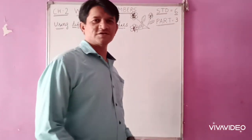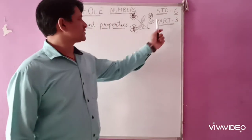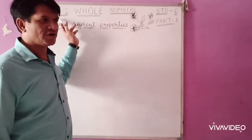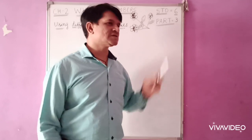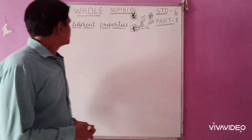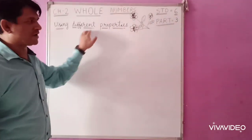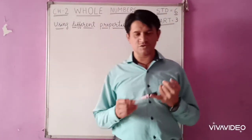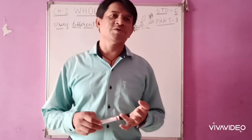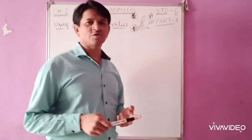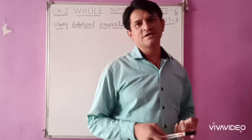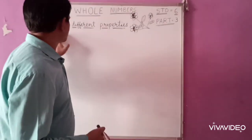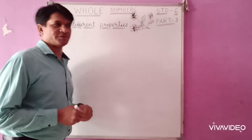Good morning, students of Stream Assist video link, Standard 6. Now we are in Chapter 2, Whole Numbers. This is the third part of the video. Today we will be using different properties. In the last video we learned different properties such as closure property, commutative property, associative property, and distributive property for addition and multiplication. Today we will be using the distributive property.